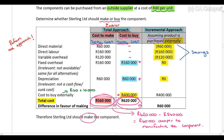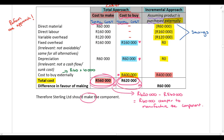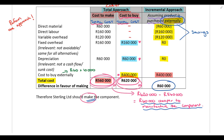The purchase cost is 40 rand per unit × 10,000 units = 400,000 rand. The net effect using the incremental approach is an extra cost of 60,000 rand if I purchase externally, meaning it's 60,000 rand cheaper to manufacture the component myself — exactly the same answer as the total approach. Therefore, we should make the component.